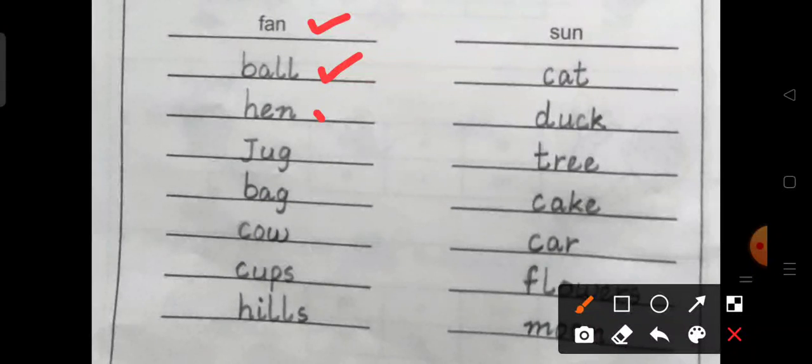Write ball, hen, jug, bag, cow, cups, hills. Then the things that you see in the second picture.